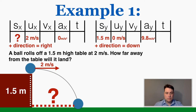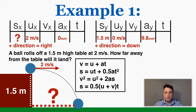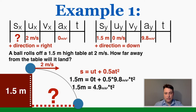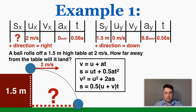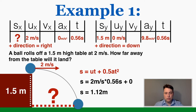I'm trying to find x displacement, but I only have two other variables in the x direction, so I can't solve it yet. Instead I solve for time using the y-axis table, where I have displacement, initial velocity, and acceleration. Using the second kinematic equation, I get t = 0.56 seconds. That's the time it takes to fall 1.5 meters, and also the time it's traveling in the x direction. Taking that time over to the x table and using the same equation to solve for x displacement gives 1.12 meters. So the ball lands 1.12 meters away from the table.